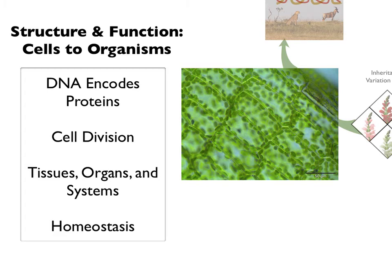In this instructional segment on structure and function — cells to organisms — students finally get into the nuts and bolts of how cells work. They refine their models of how DNA encodes proteins, the role proteins play in helping cells accomplish their function, and how cells divide. Students also look at how specialized cells work together to create tissues and organs, interact within systems, and maintain homeostasis. Life science concepts dominate this segment, though students can apply their models to case studies of contamination and outbreak, predicting the impact of waterborne disease or toxicity, relating to the health of Earth's air and water.